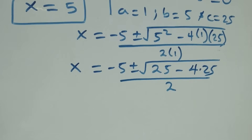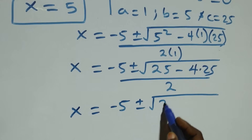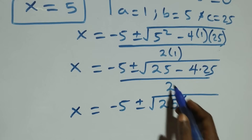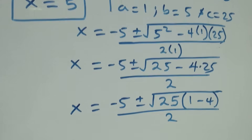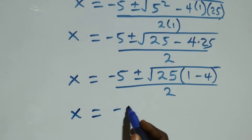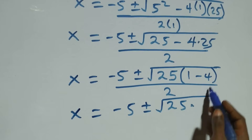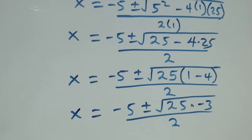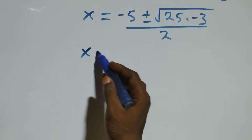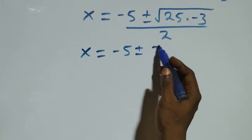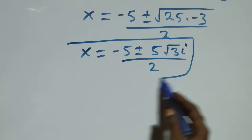We have x equals to minus 5, plus or minus square root of 25 — factoring out 25 as common — times 1 minus 4, which leaves minus 3, over 2. So x equals to minus 5 plus or minus square root of 25 times minus 3, over 2. This gives square root of 25 as 5, so x equals to minus 5 plus or minus 5 times root 3 i, over 2. This again yields 2 complex solutions.